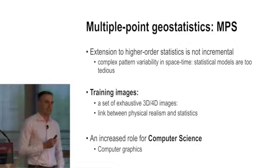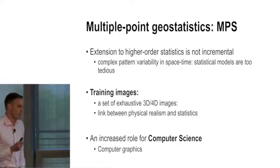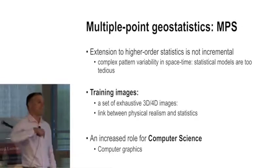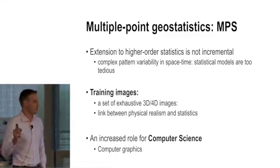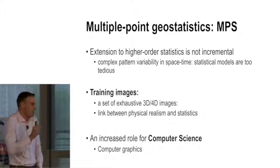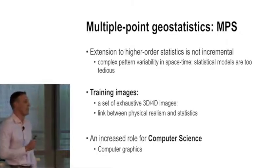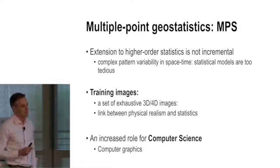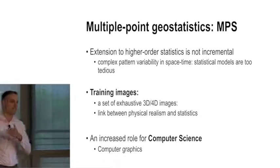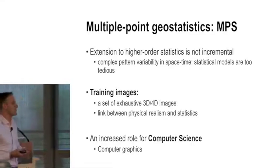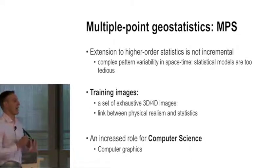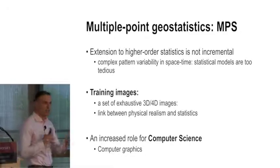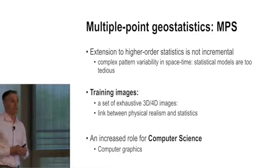So that is really why multipoint geostatistics was born. It was born only 10-15 years ago, and it's truly a Stanford product, and it's been taken up by many other researchers in the world. It's an extension to higher-order statistics, but what we recognized immediately is that to extend to higher-order statistics, you can't go incremental. It's not the third order and the fourth order and the fifth order. That didn't improve anything. Actually, it made things more complicated. The models got more complicated, the estimation became more complicated, and nobody was using that. So it failed. The second thing we have to realize is that if we want to communicate physics with statistics, we have to have a bridge, and that bridge is the training images. It's a little deceiving, this word 'image,' because it's not 2D. It's 4D. It's spatial, temporal, and it's an example of what you believe is physically realistic.